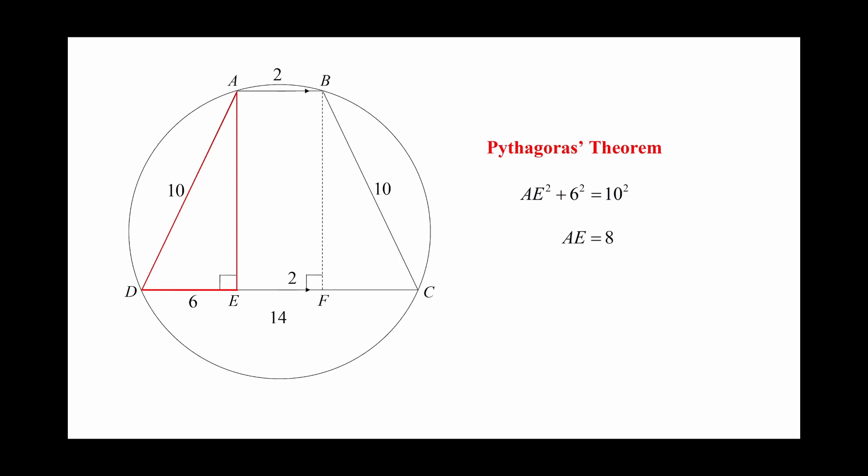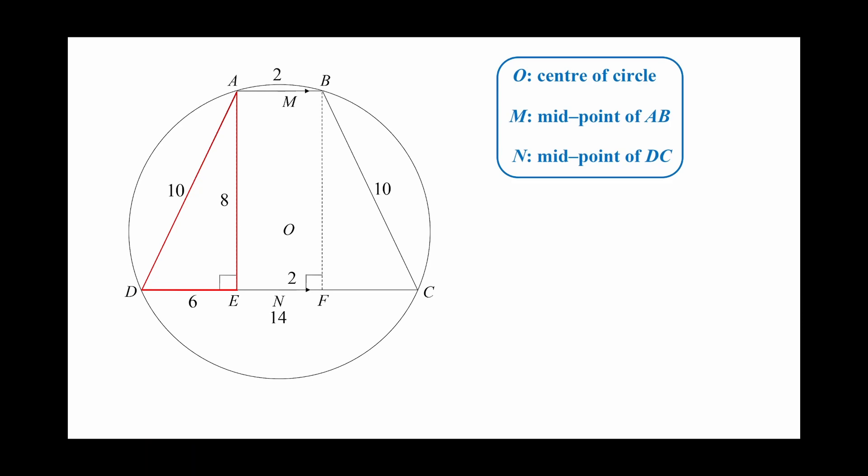We have all the information about the trapezium. How do we use them to figure out the area of the circle? Let O be the center of the circle. M and N are the midpoints of the upper side AB and the lower side DC respectively.